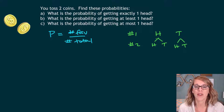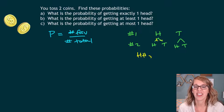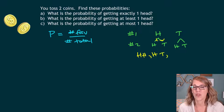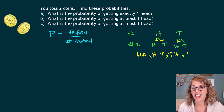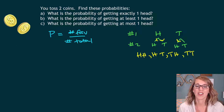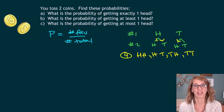To come up with my sample space, I'm going to follow the branches through. That gives me heads-heads, then heads-tails. Moving over to the other part of my tree diagram, that's going to be tails-heads, and tails-tails — for four total possible outcomes.